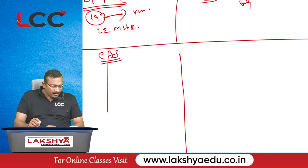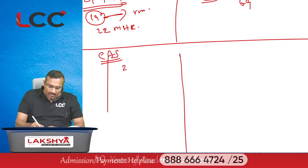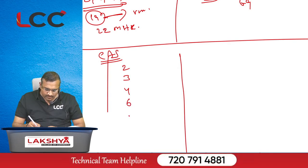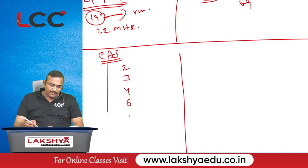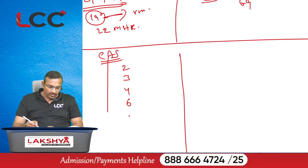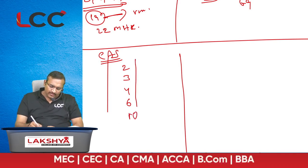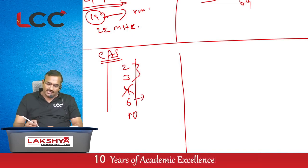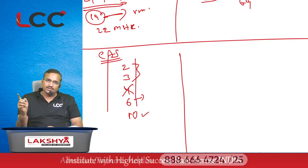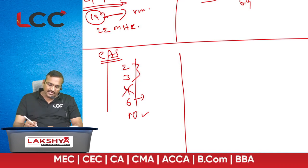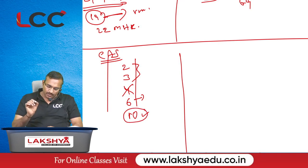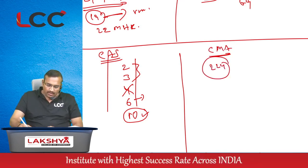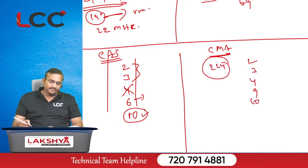From the cost accounting system chapter, from our lecture material the important questions are number 2, 3, 6, and 10. Question number 2 and 3 generally introduce the non-integrated system and ledgers. Question number 6 is the reconciliation statement. Question number 10 is the calculation of profit as per the financial accounting system, calculation of profit as per the cost accounting system, and preparation of the reconciliation statement — very very important, please practice at least once. From the CMA material, page number 224: questions 2, 3, 4, 9, and 10.